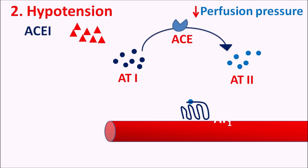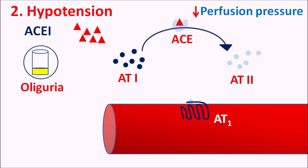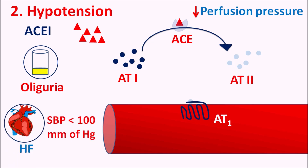When a patient is administered ACE inhibitors, they block ACE enzyme activity, decreasing angiotensin II levels. In the absence of angiotensin II, blood vessels dilate, resulting in hypotension. ACE inhibitors can also produce orthostatic hypotension — a decrease in blood pressure with change in position. This hypotension is more pronounced in patients with oliguria, decreased urine output, or heart failure with systolic blood pressure below 100 mmHg, and in patients on diuretics with volume depletion.